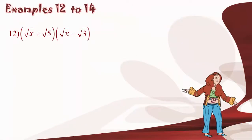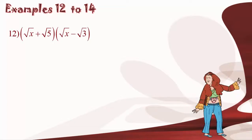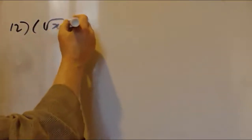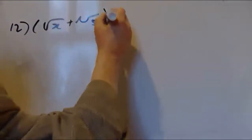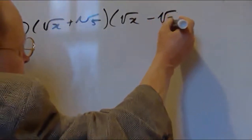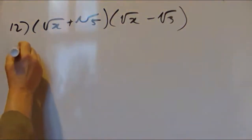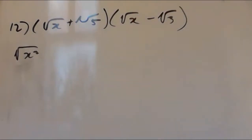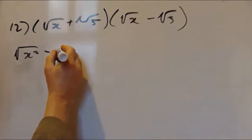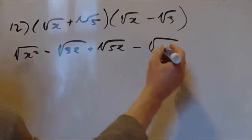In example number 12, we're asked to multiply the two binomials square root of x plus square root of 5 times square root of x minus square root of 3. These aren't conjugates because 5 and 3 are different, so we just proceed normally using FOIL. We get square root of x squared, minus square root of 3x, plus square root of 5x, minus square root of 15.